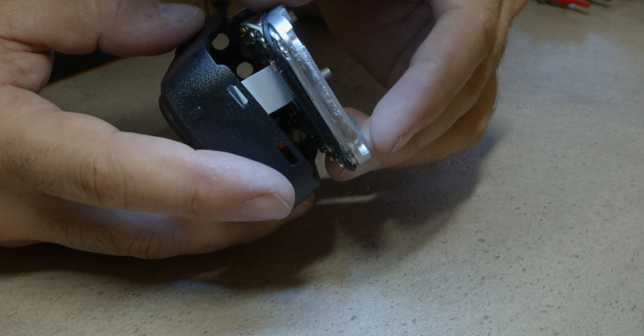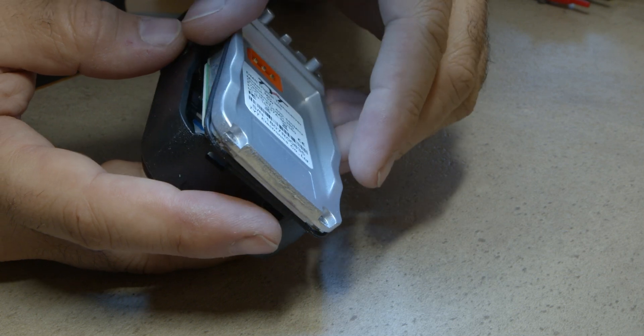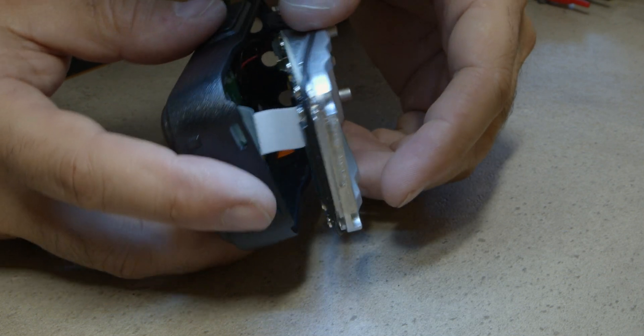Once you have the heat sink separated, gently slide it down to release the knob shafts and the antenna connector from the case.